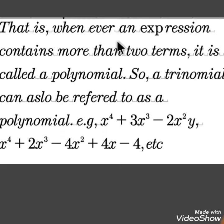That is, whenever an expression contains more than two terms, it is called a polynomial. So a trinomial can also be referred to as a polynomial. E.g., x to the power of 4 plus 3x cubed minus 2x squared y. Again, x to the power of 4 plus 2x cubed minus 4x squared plus 4x minus 4, etc.